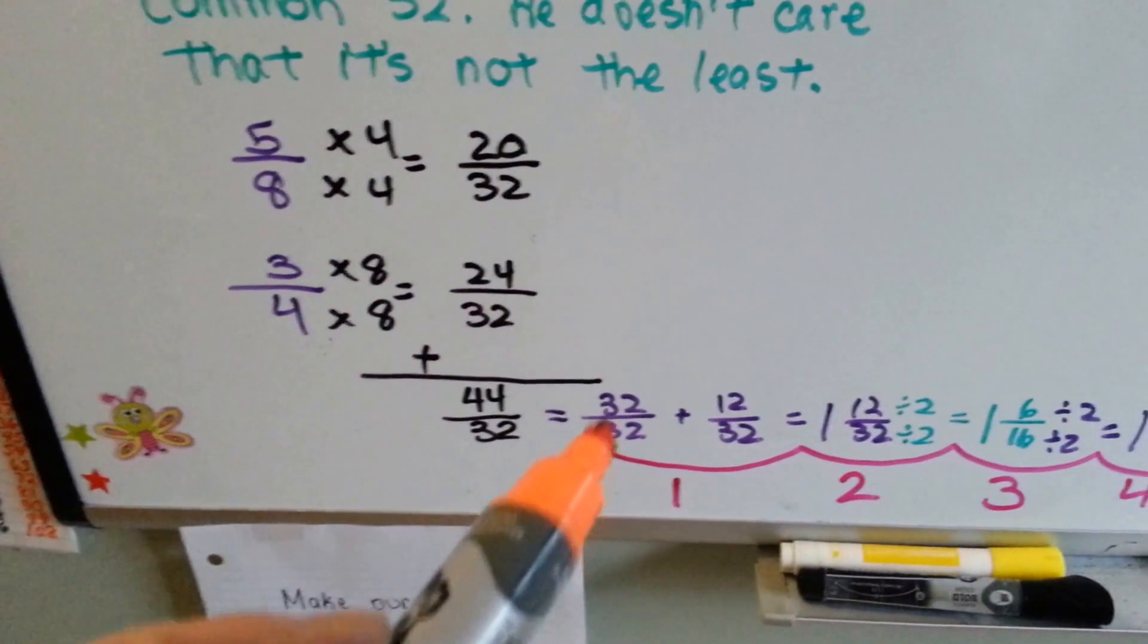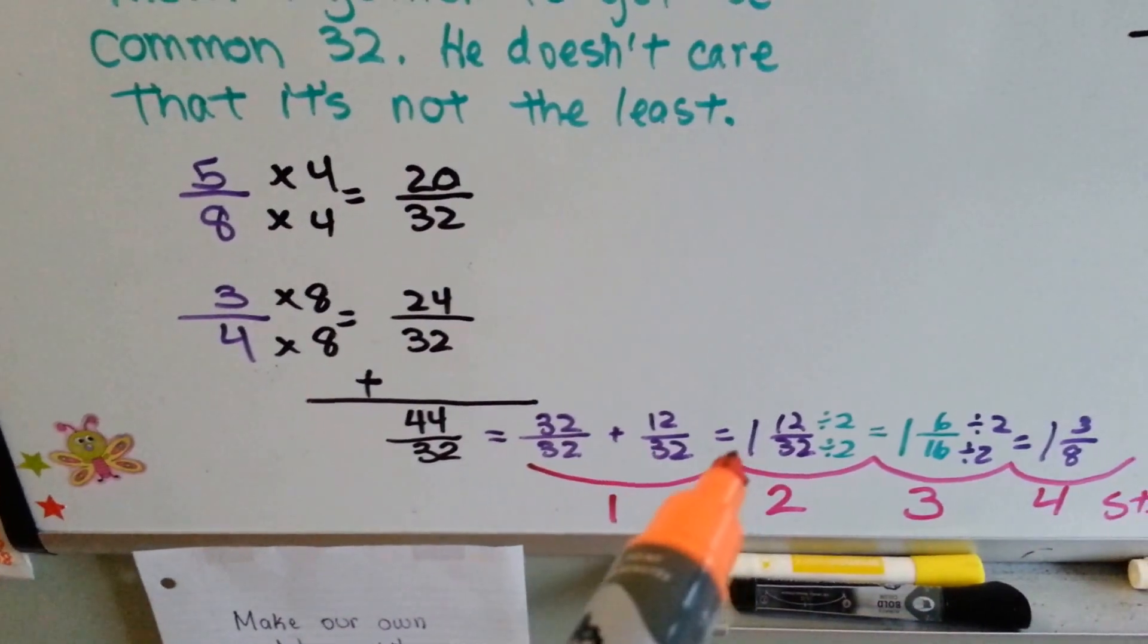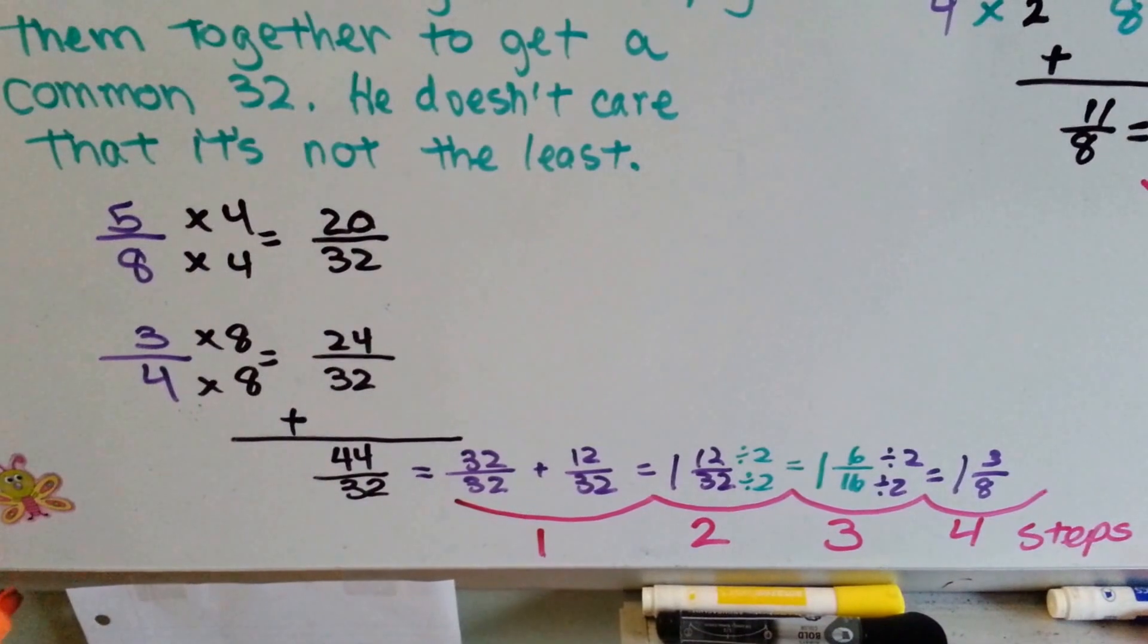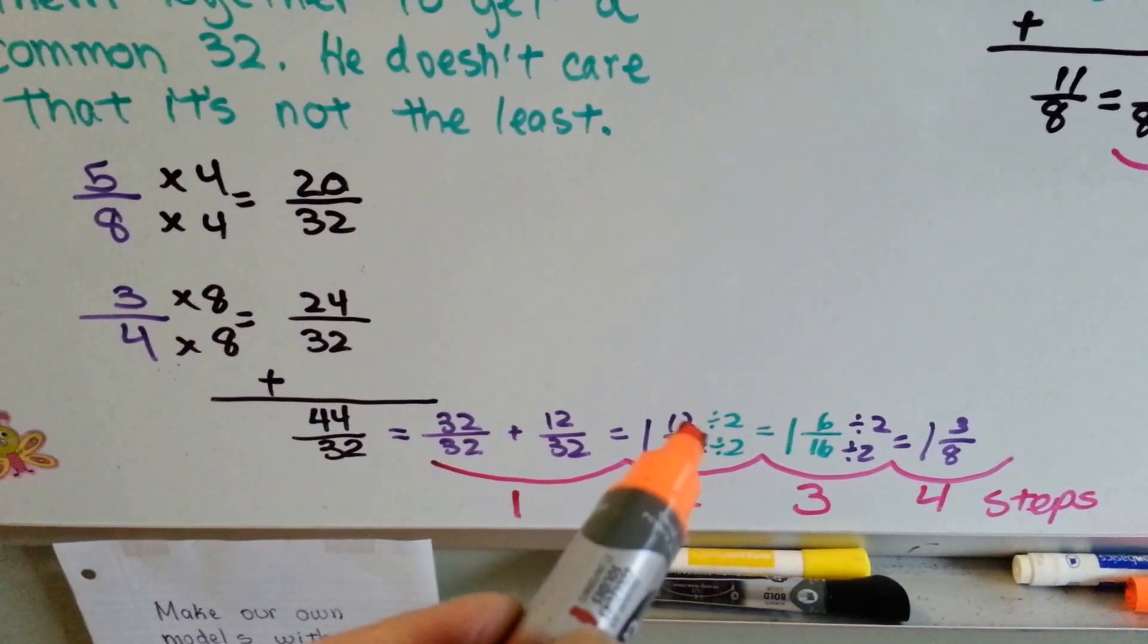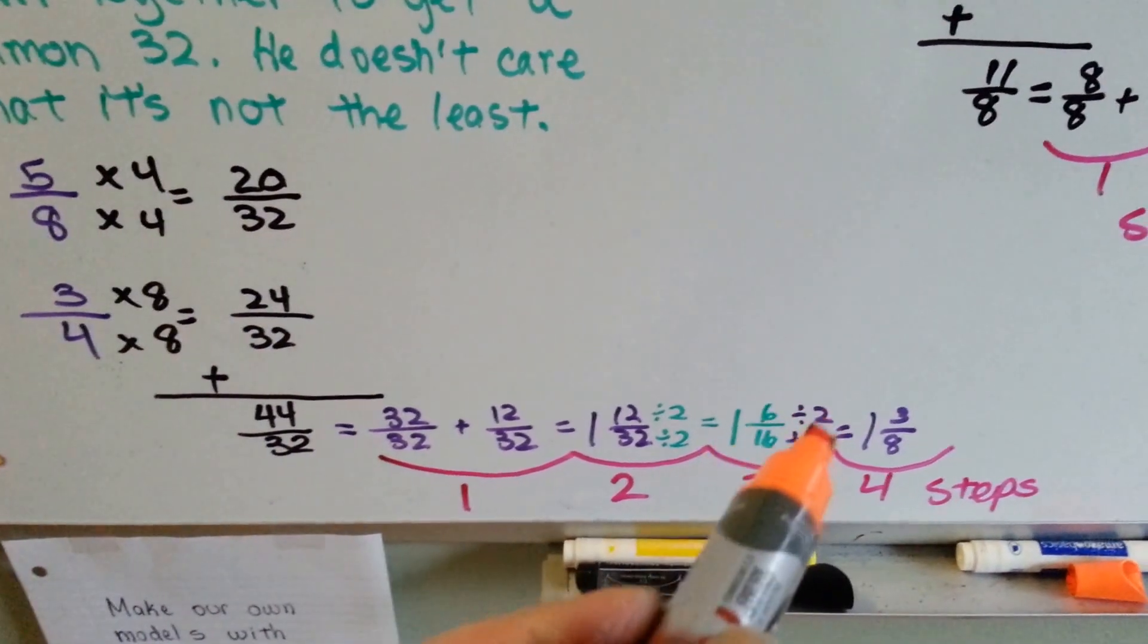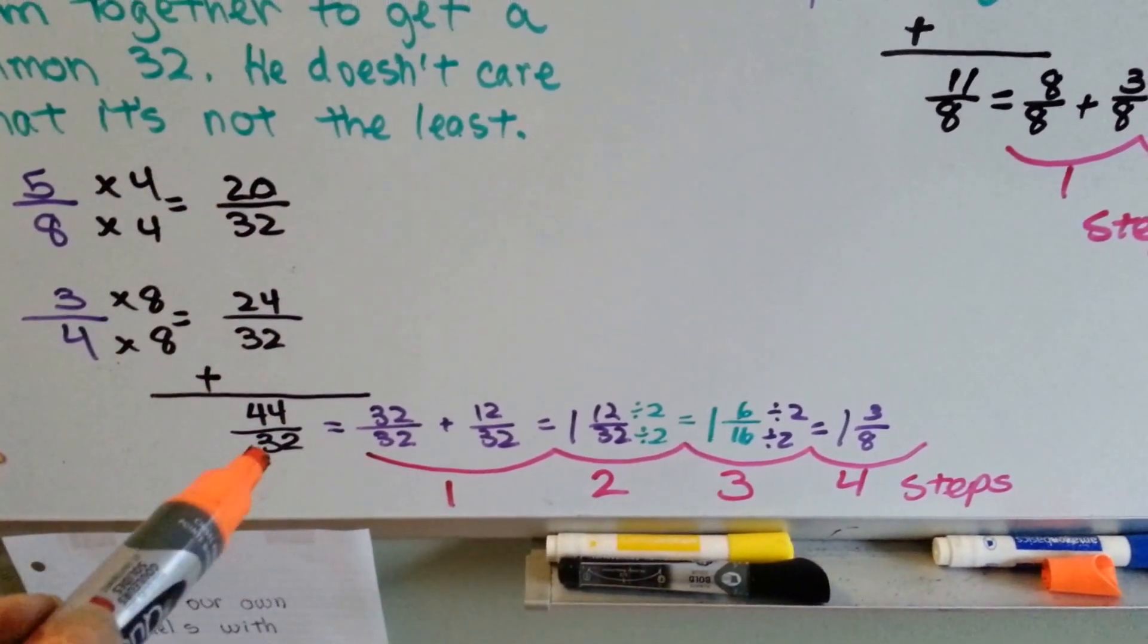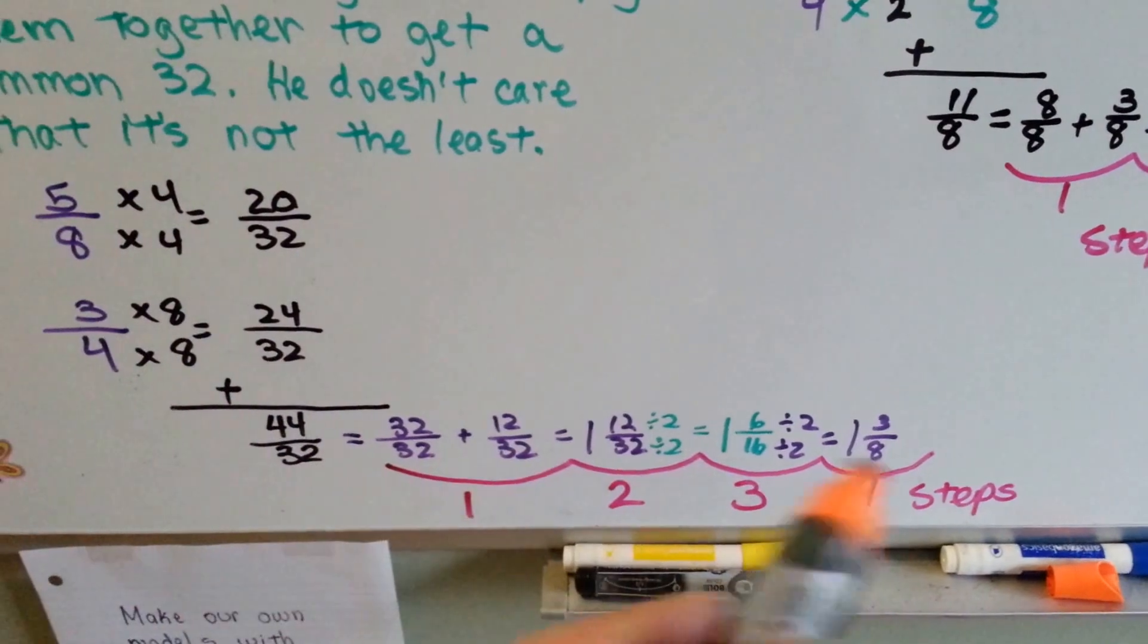So he pulls 32/32 out of it because he knows that equals 1, and that's going to leave 12/32. So now he's got 1 and 12/32. He knows he can divide these two in half to reduce them. So he doesn't use the greatest common factor to reduce them. He just keeps dividing them by 2. So 12 divided by 2 is 6 and 32 divided by 2 is 16. Oh yeah, it needs to be reduced again. So he divides them by 2 again and he gets 3/8. It took him 1, 2, 3, 4 steps to reduce it to its lowest terms.